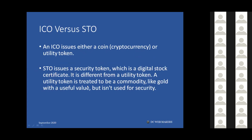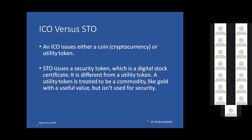A utility token is treated like a commodity — like gold — with useful value but not used as a security. One key difference is that an ICO has intrinsic value — the value is in the token itself. An STO is more like an investment — like being an angel investor in a startup that may or may not go well. There's a leap of faith involved.